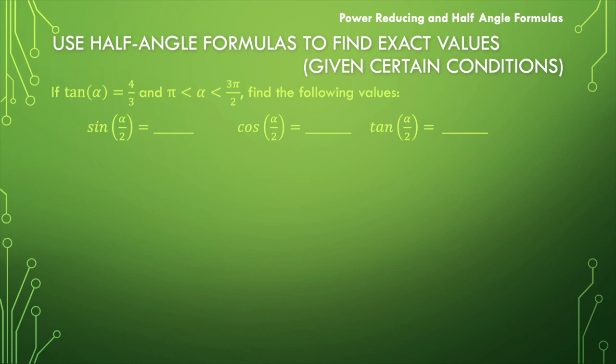It's very important that when we're talking about this type of problem, we recognize that we are talking about two different angles, and their relationship is that one is exactly double the size of the other. For example, alpha could be 40 degrees and alpha over 2 could be 20 degrees. So we may have some information about one of the angles, but we want all of the information about the other angle.